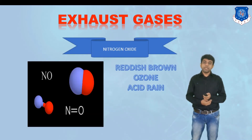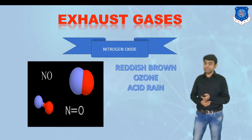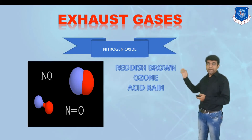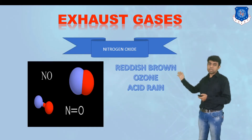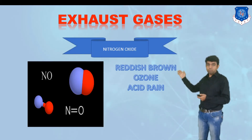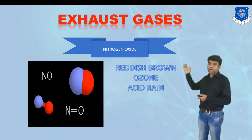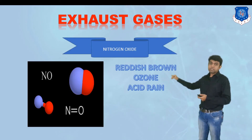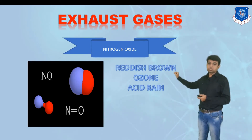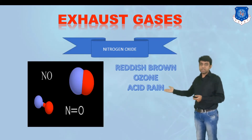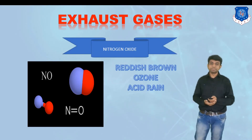The second gas is nitrogen oxide. You can easily identify it by its reddish-brown color. However, the problems caused by nitrogen oxide are very significant — the major one being ozone layer depletion, and it also contributes to acid rain.